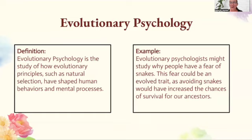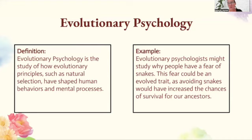Evolutionary psychology — remember we talked about Charles Darwin — is the study of how evolutionary principles such as natural selection have shaped human behaviors and mental processes. For example, an evolutionary psychologist might study why people have a fear of snakes. This fear can be an evolved trait, as avoiding snakes would have increased the chances of survival for our ancestors.